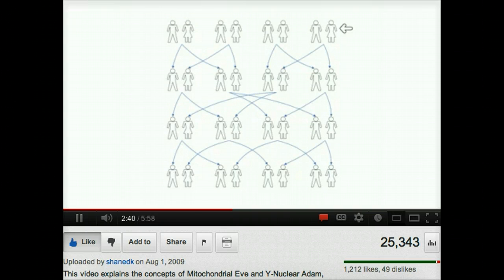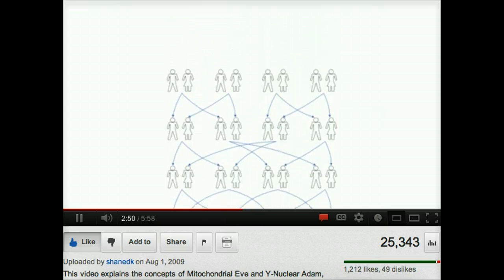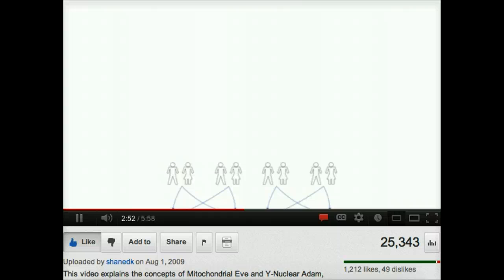But they're still common ancestors and they've still contributed a lot of their nuclear DNA to the current generation. So Eve is not the only common female ancestor, nor is she the first human female. We can imagine the first generation in our diagram as having a long line of ancestors above it.